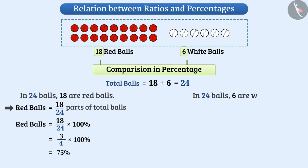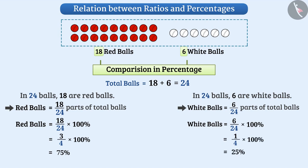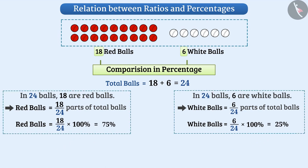Keep in mind that in both situations we have used the unitary method. The number of white balls is 6 out of 24 balls, so white balls are 6 divided by 24 multiplied by 100 percent, equal to 1 divided by 4 multiplied by 100 percent, equal to 25 percent.